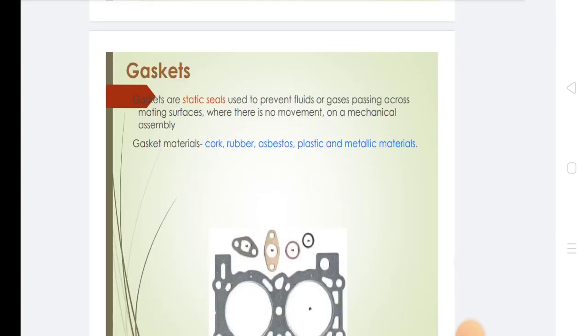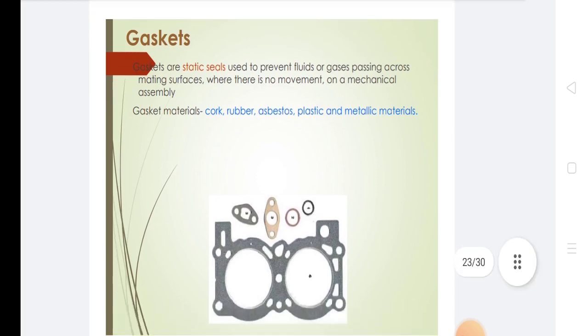Gaskets are static seals used to prevent fluids or gases from passing across mating surfaces when there is no movement in a mechanical assembly. Gasket materials include cork, rubber, asbestos, plastic, and metallic materials.